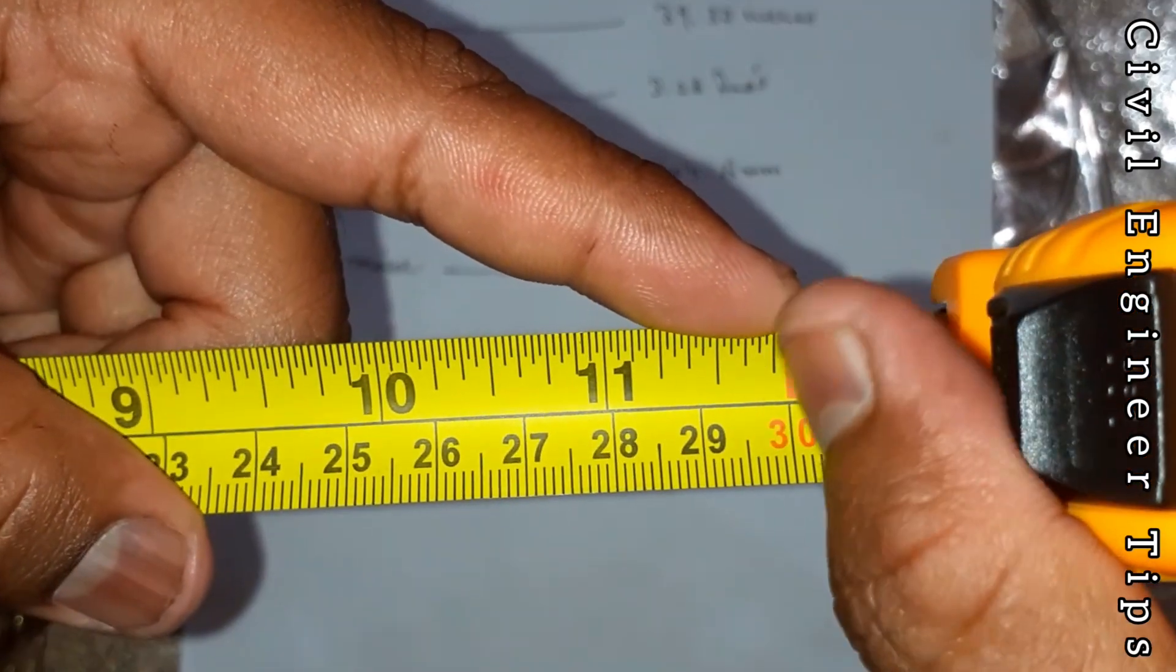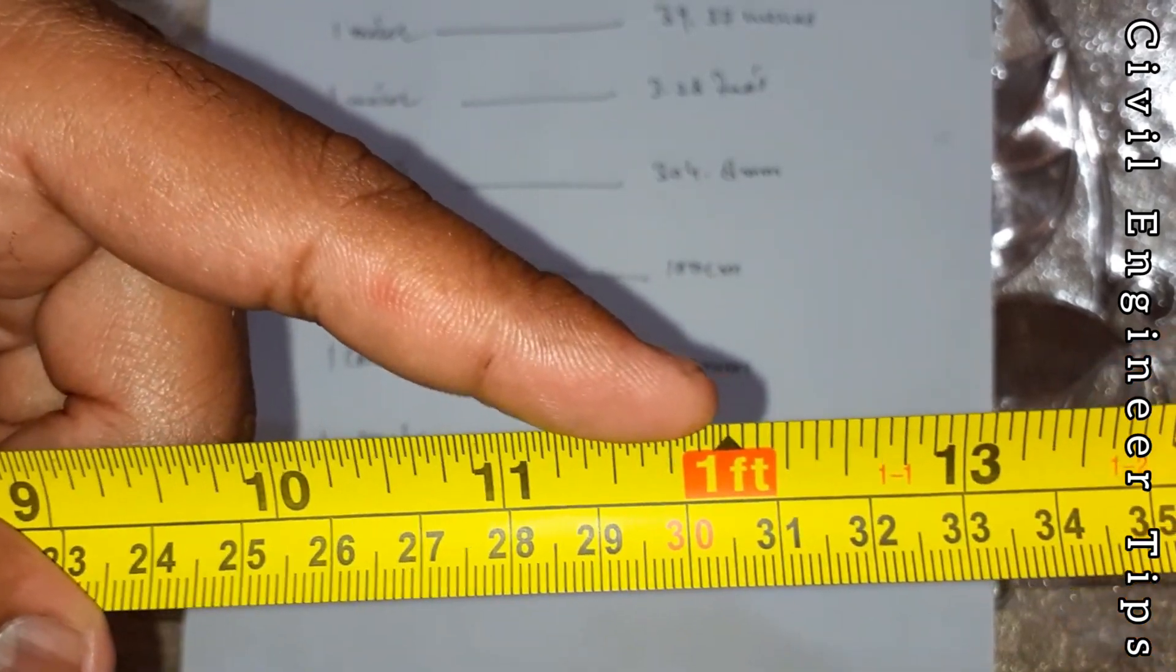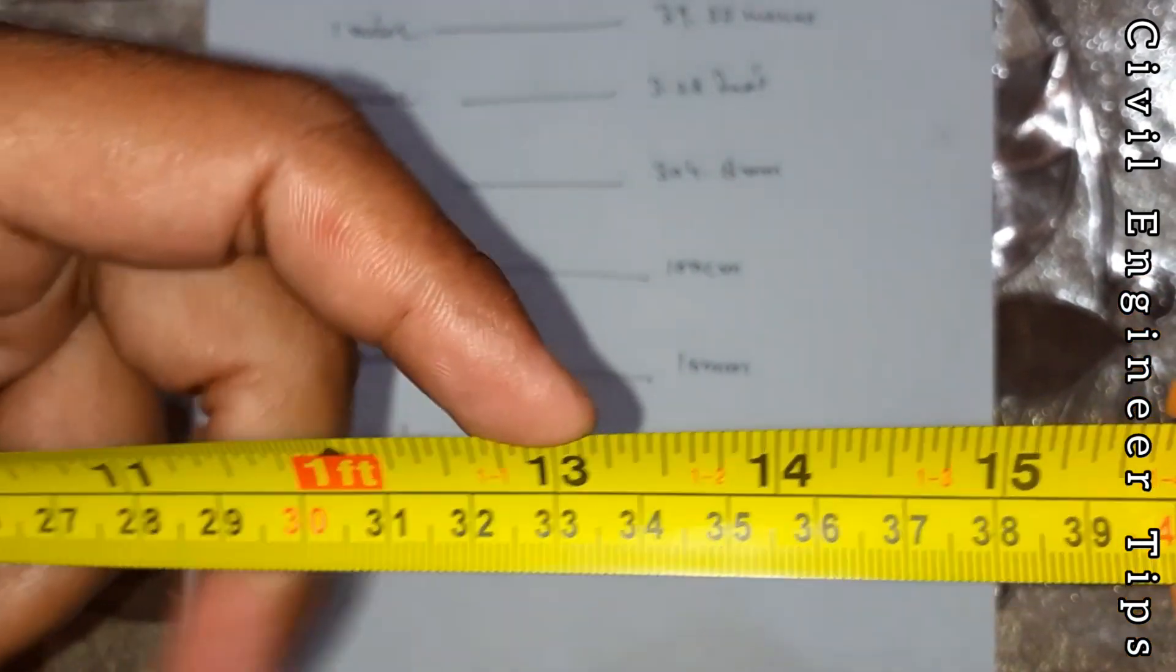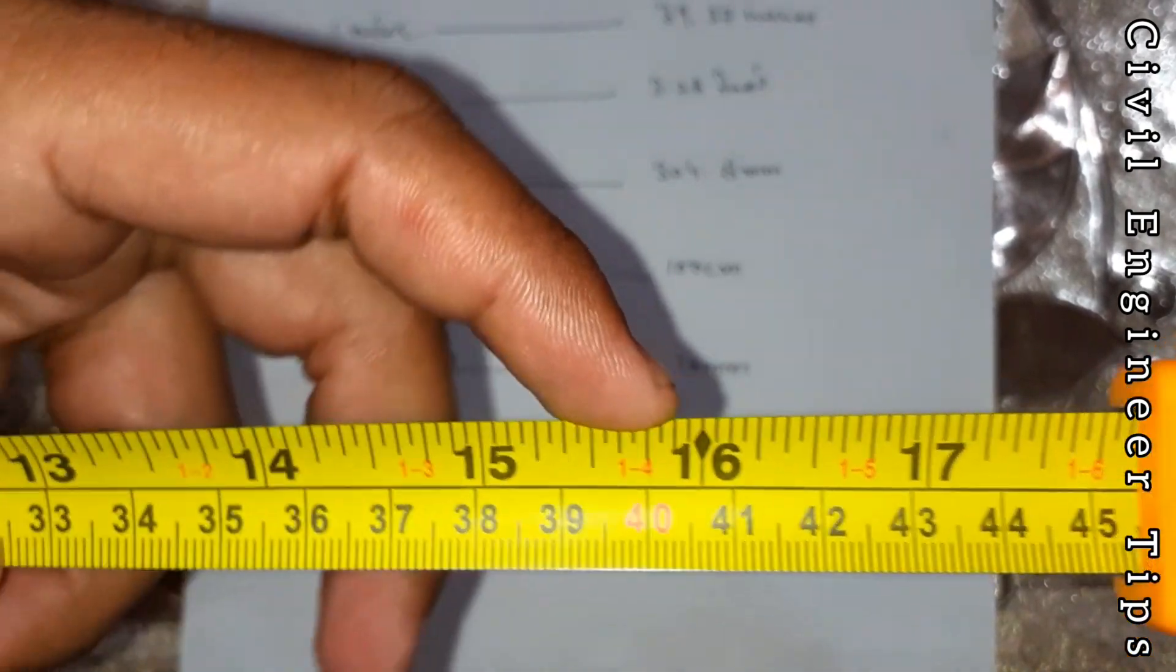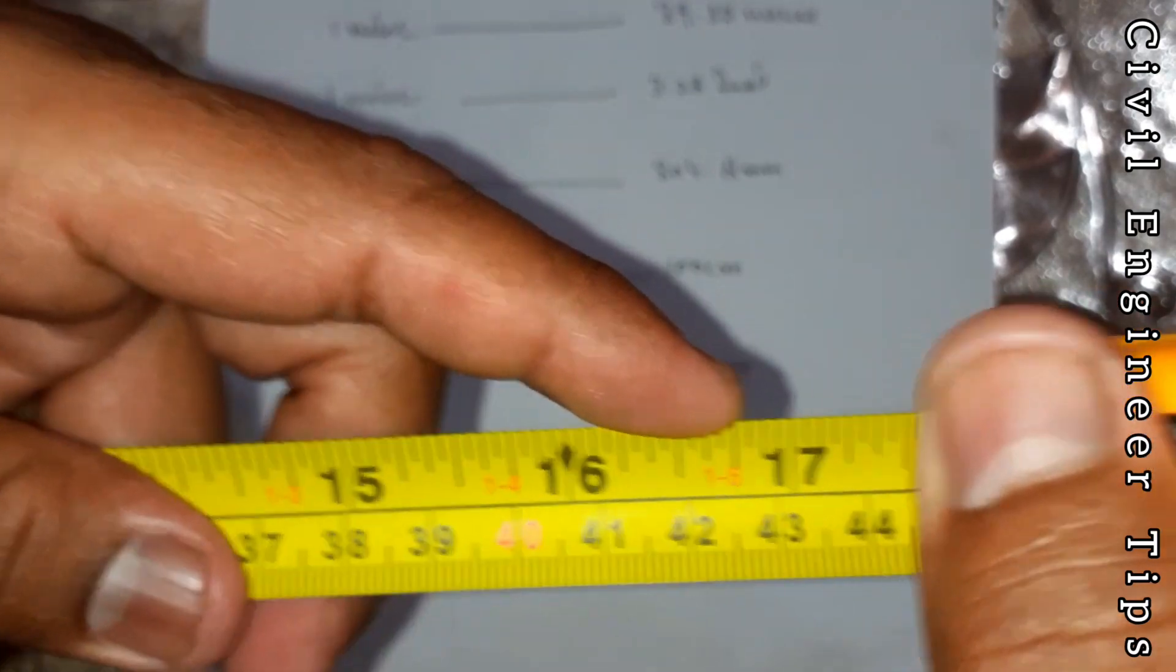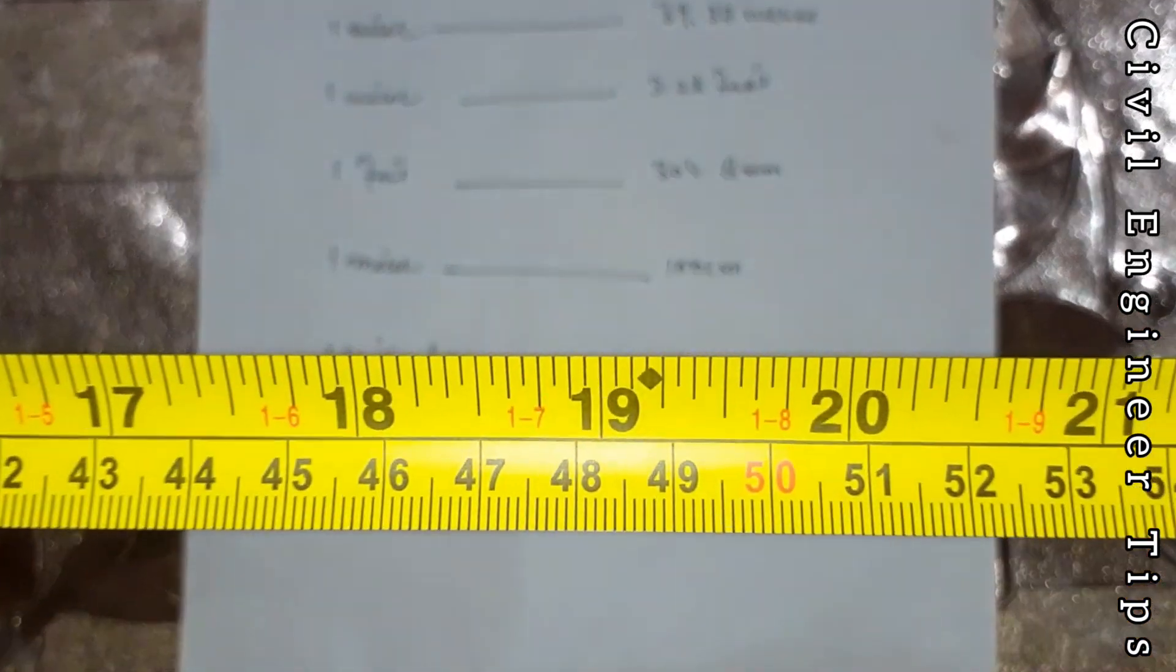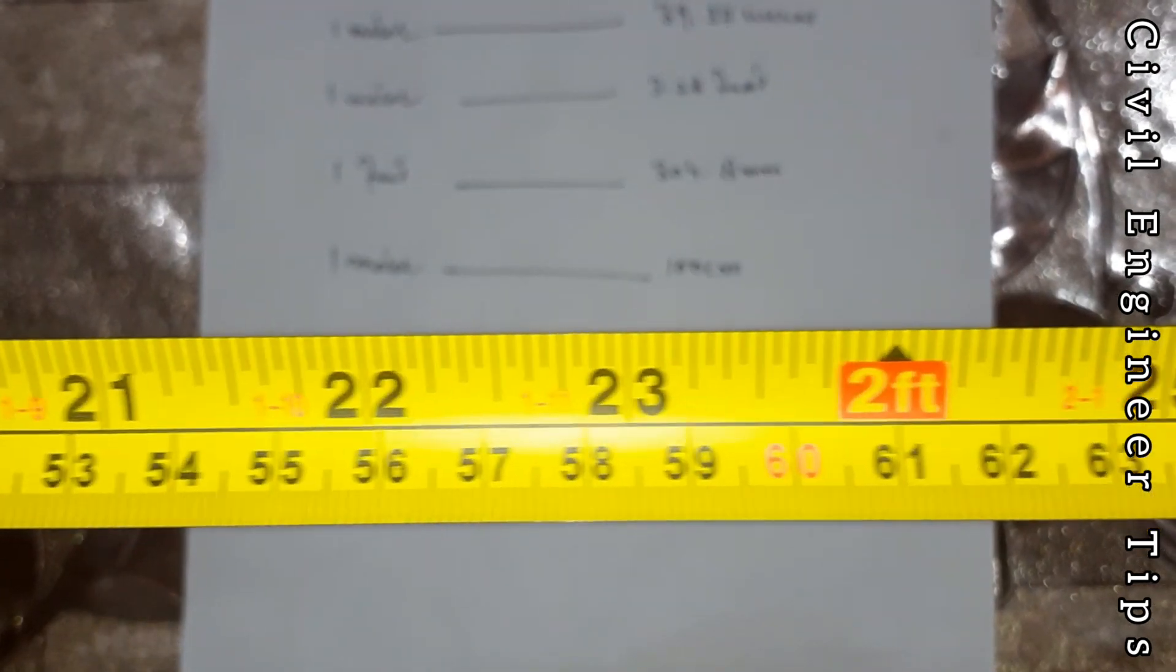12 inches is equal to one foot. After this, one foot one inch, one foot two inches, one foot three inches, one foot four, five, six, seven, eight, nine, ten, eleven, and two feet.